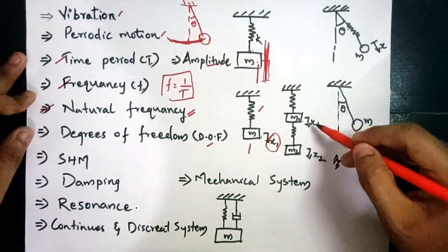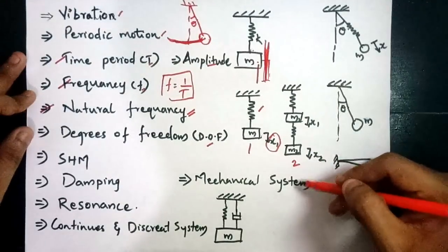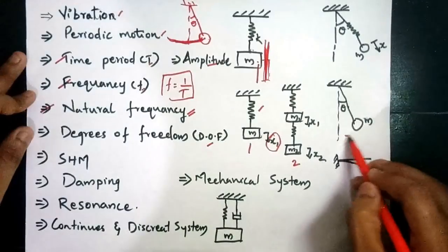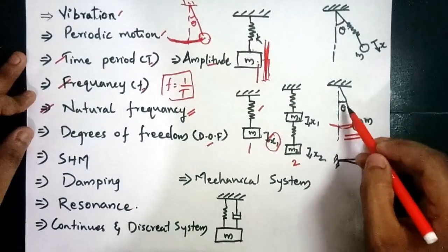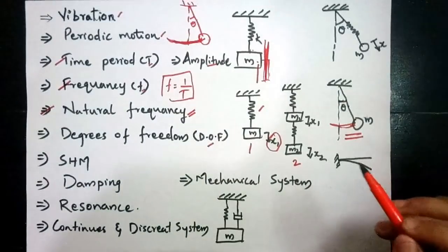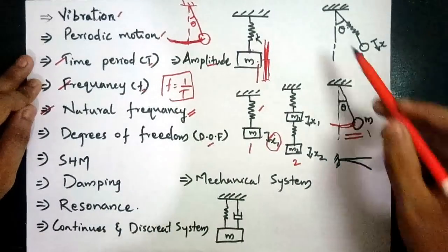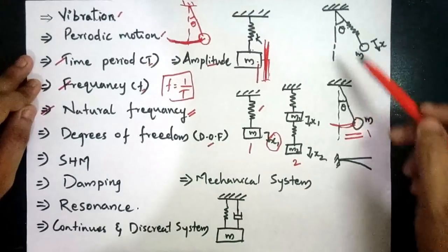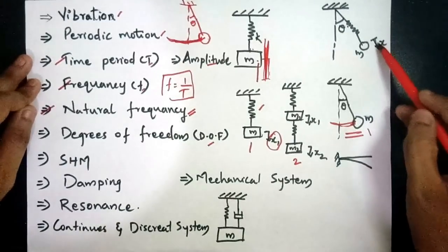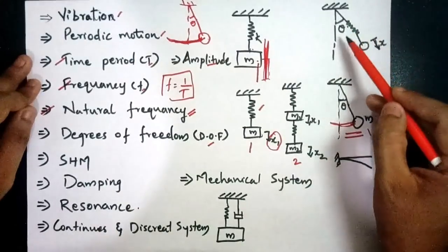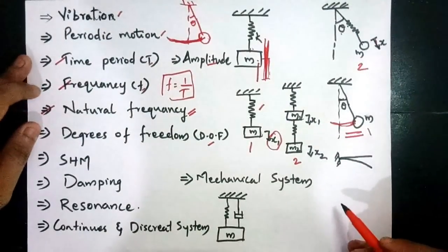If the number of independent coordinates is two, then the degrees of freedom is two. If the number of independent coordinates is three, then the degrees of freedom is three. For a simple pendulum, if one coordinate — theta — is sufficient to describe the motion completely, then the degrees of freedom is equal to one. For a system with both theta and displacement X as independent coordinates, the degrees of freedom is equal to two.